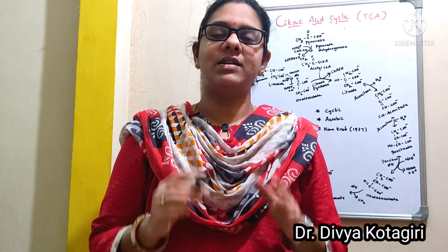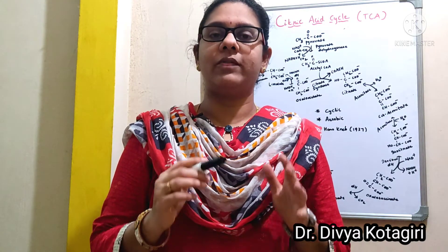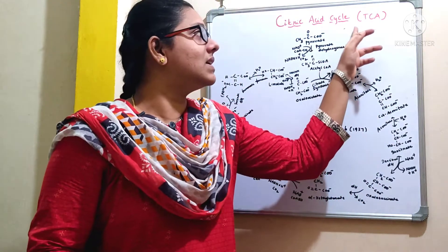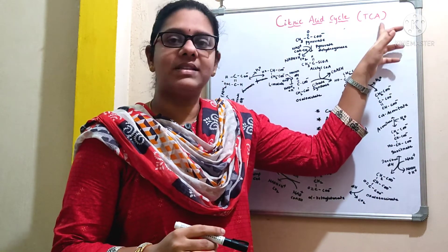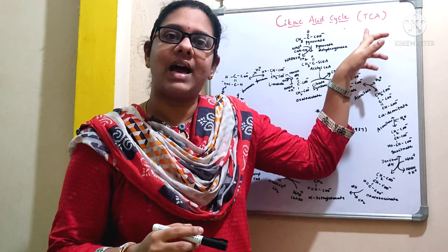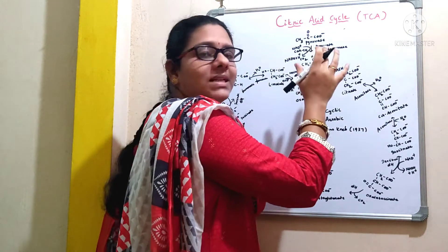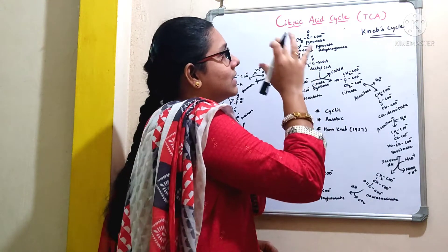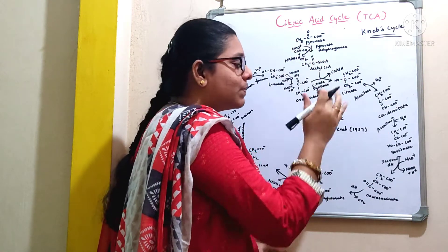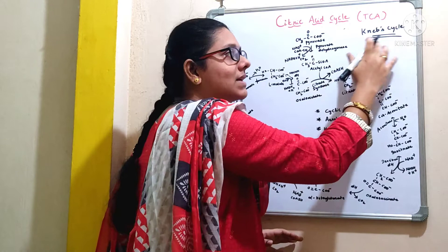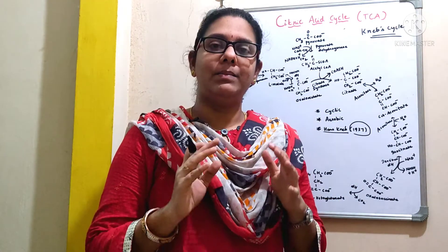Hello everyone, welcome back. In this video, let us discuss about one of the important metabolic pathways that is the citric acid cycle. This citric acid cycle is also called as TCA, which stands for tricarboxylic acid. This citric acid cycle is also called as Krebs cycle because it was proposed by Hans Krebs. Due to his contributions, this pathway is also called as Krebs cycle.